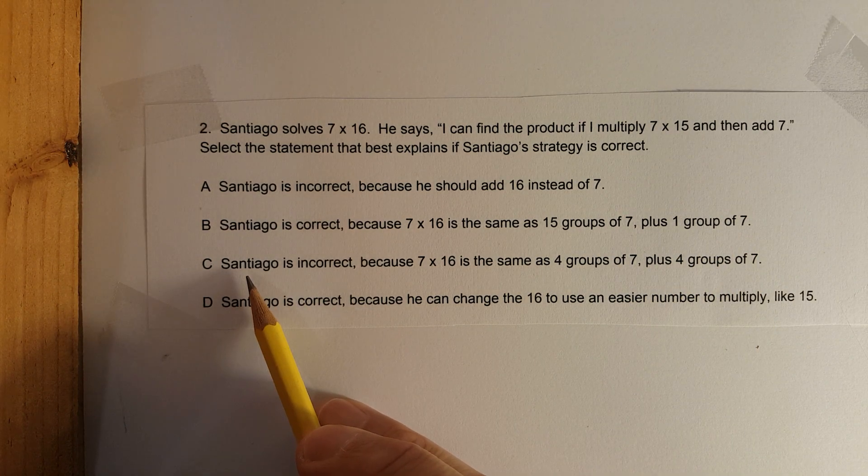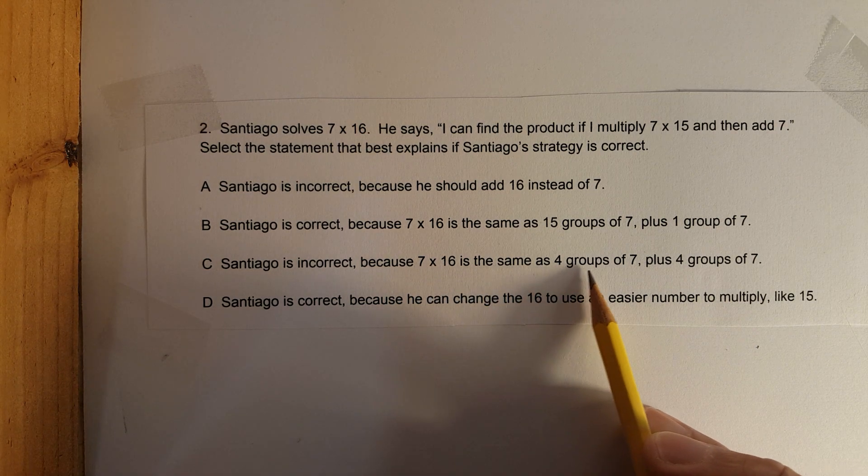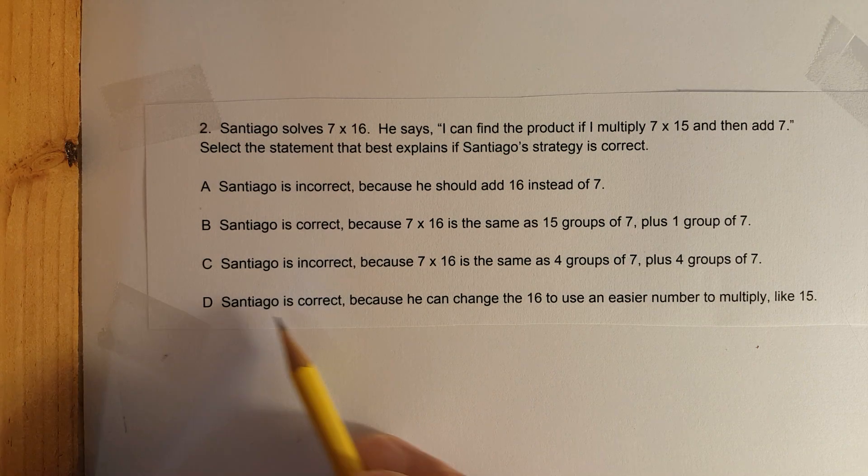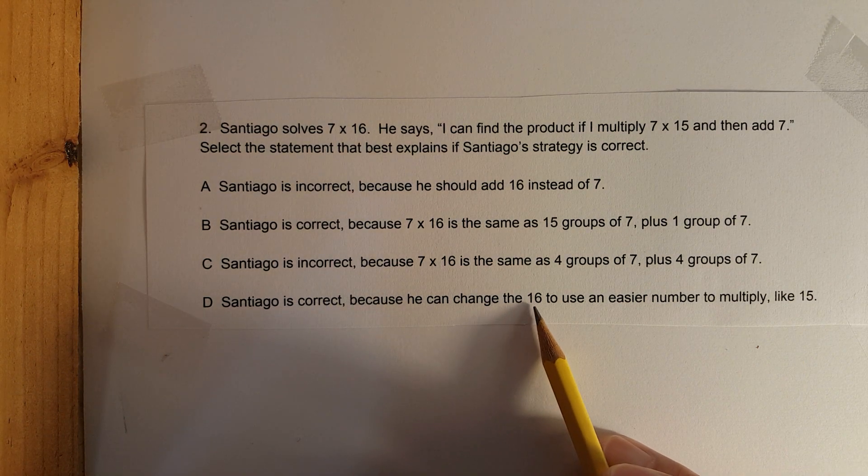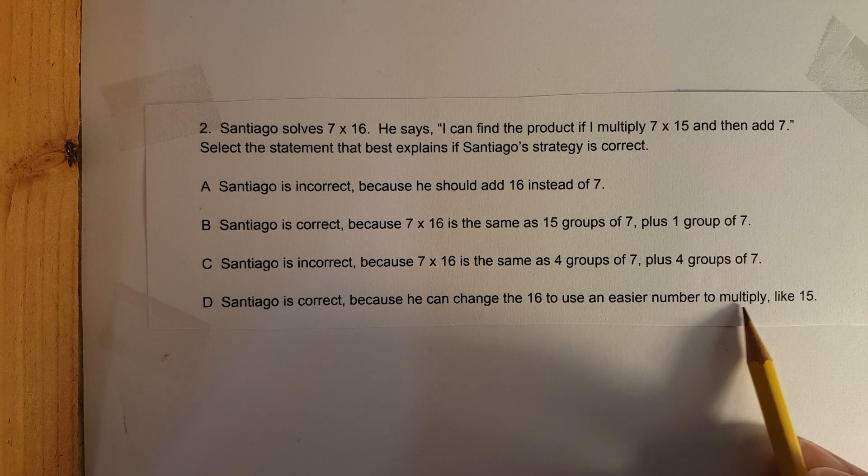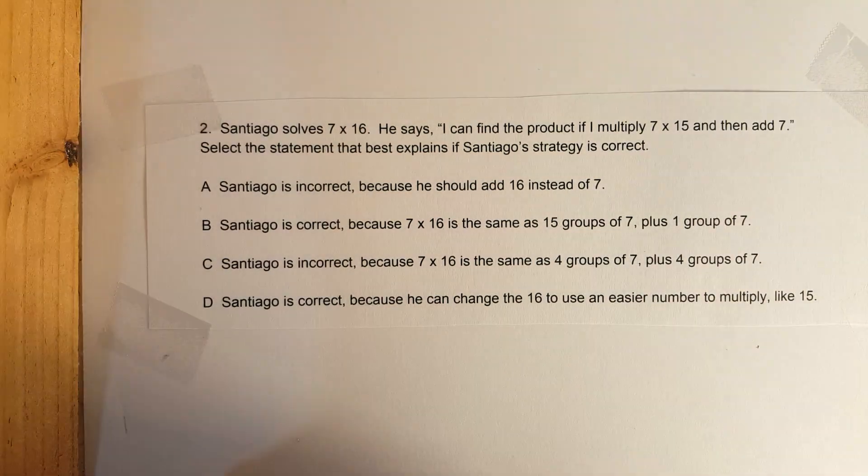Answer C: Santiago is incorrect because 7 times 16 is the same as 4 groups of 7 plus 4 groups of 7. And last answer D: Santiago is correct because he can change the 16 to use an easier number to multiply like 15. Alright, let's break it down now.